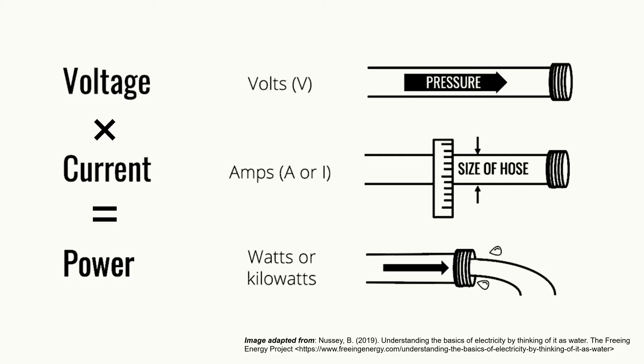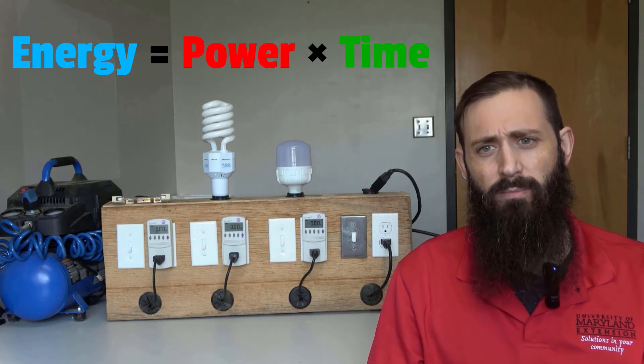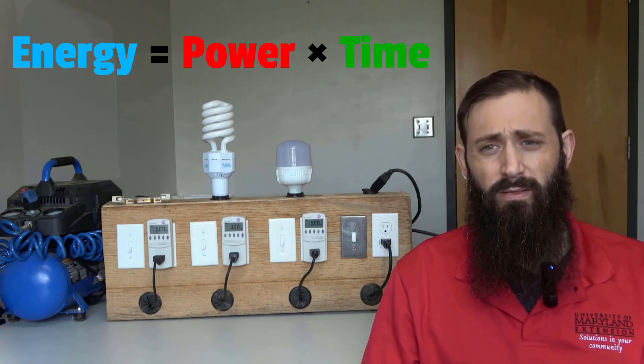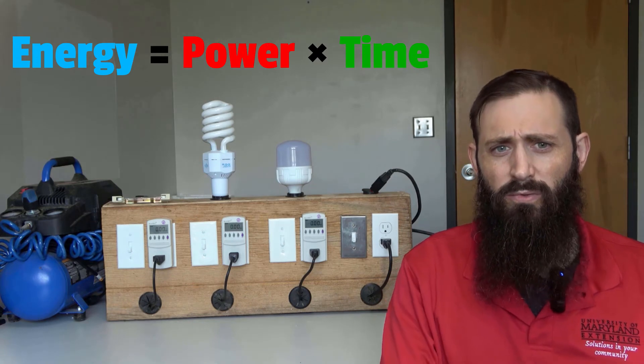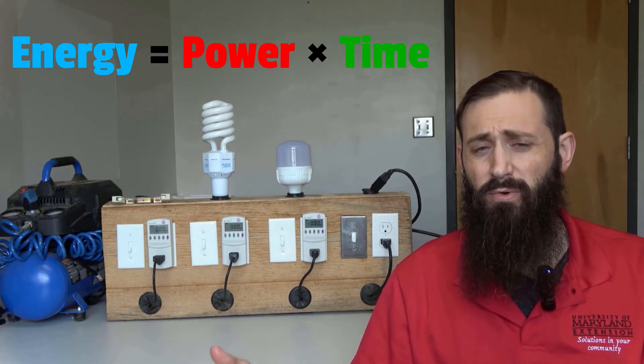Power describes the instantaneous consumption or production of electricity, which is often measured in watts, denoted by W, although larger systems may be measured in kilowatts (kW) or megawatts (MW). Energy is simply the power multiplied by time, and hence the term energy includes how long an electrical device has been used or how long it's been producing power.